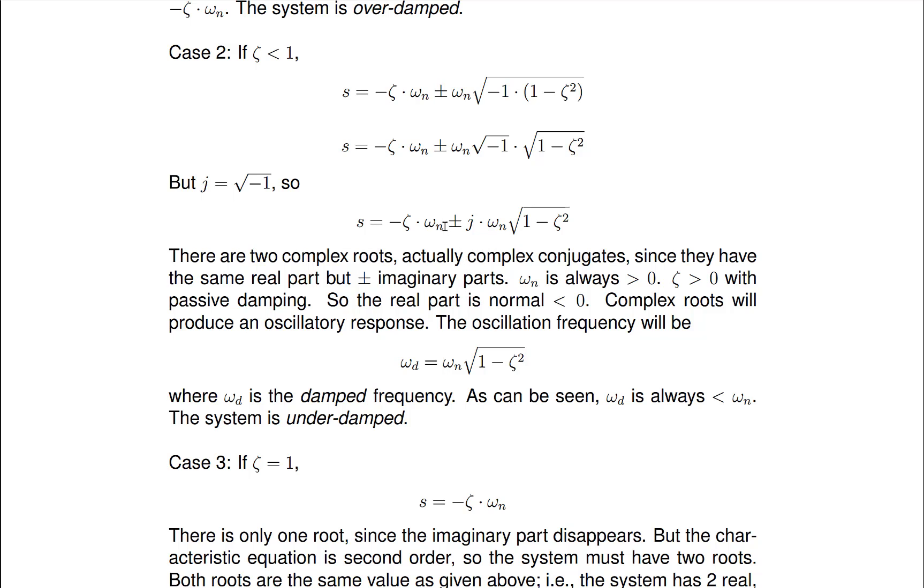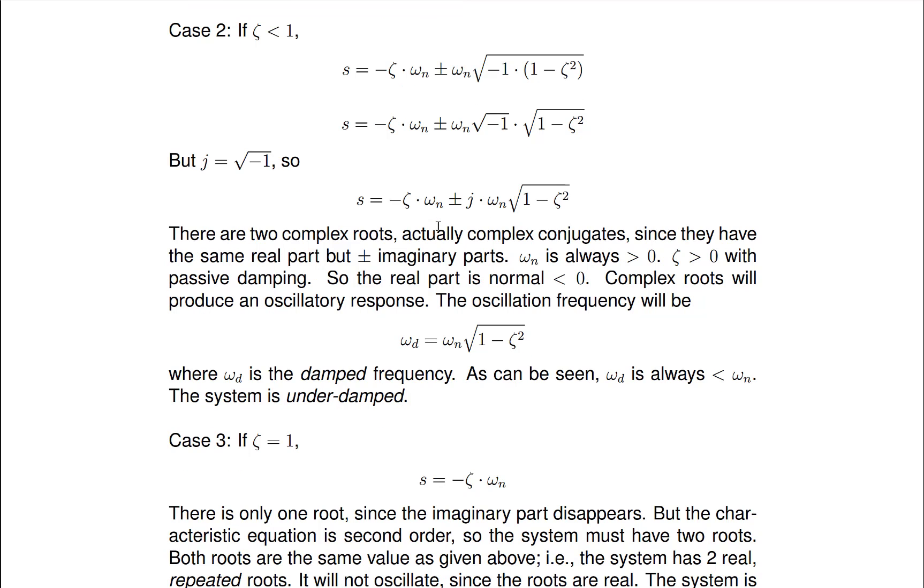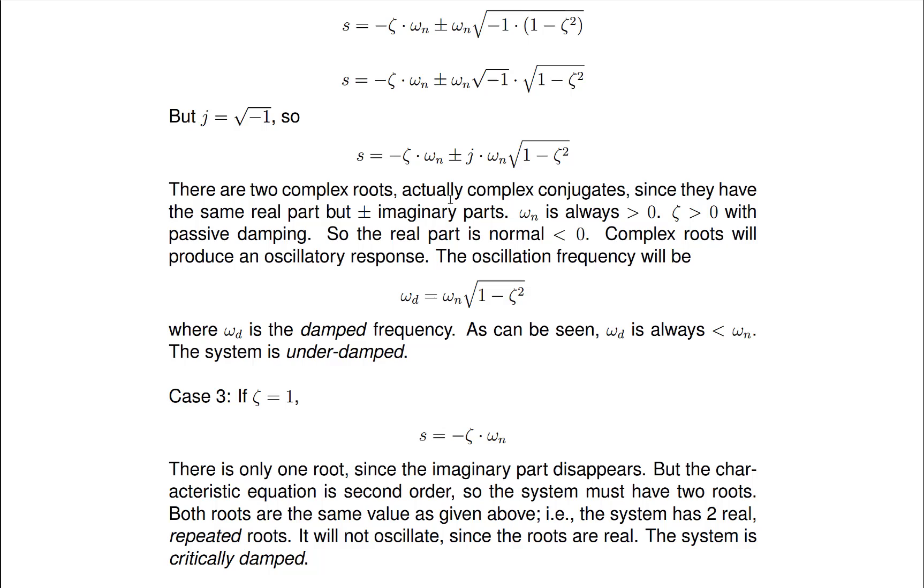And then omega n is always positive. So we said above if zeta is less than 1, normally zeta is positive too. And if that's the case then what that means is that the real part of the two complex conjugates is negative.